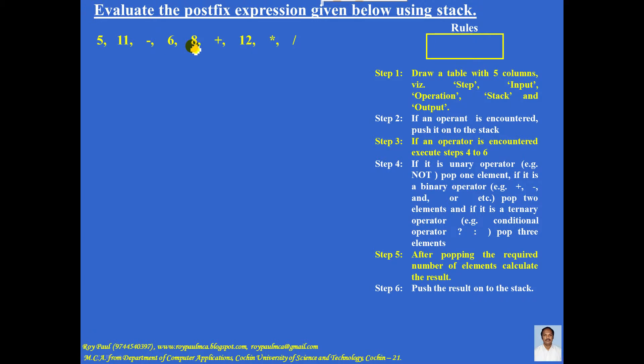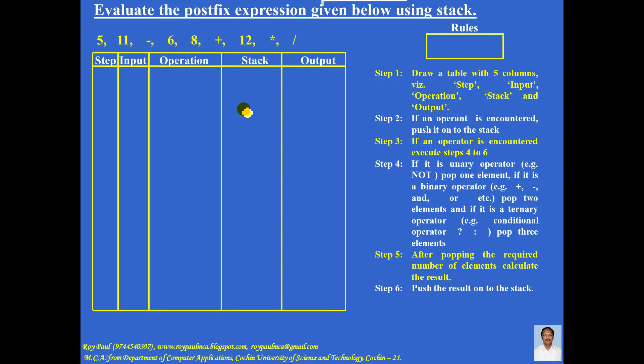You need to draw a table with 5 columns. The various headings are: step, input, operation, stack, and output.